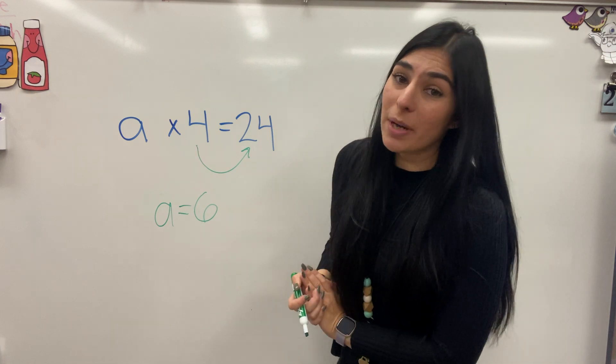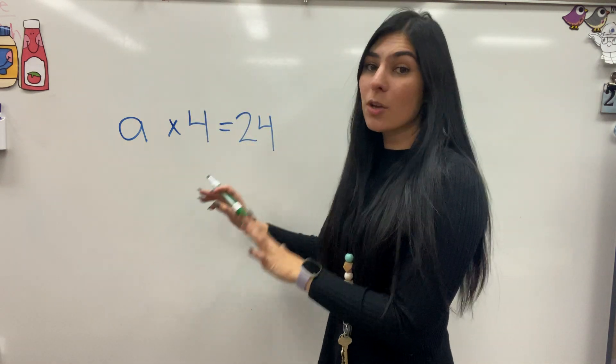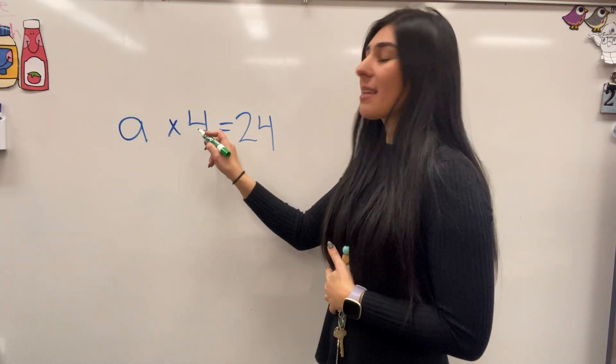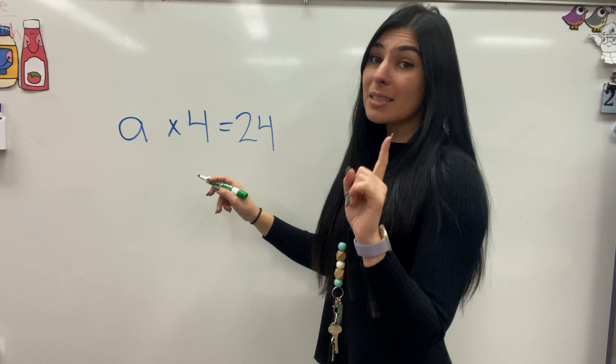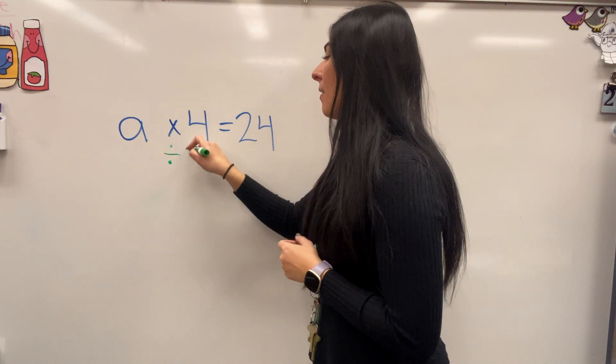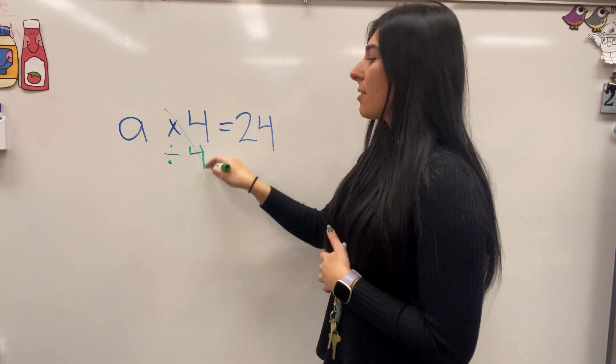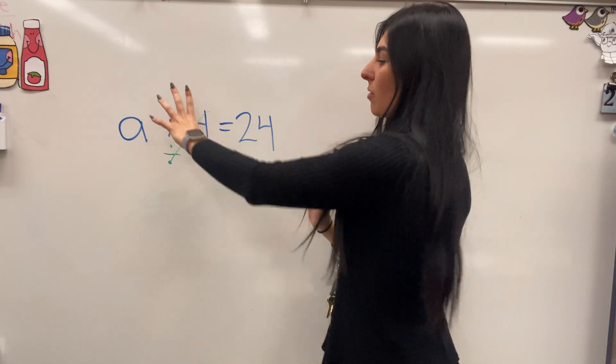Now, there is the other way to solve, which is I want to get this A by itself. So that means I'm going to take this times 4. And what is the opposite of multiplication? Division. So I'm going to instead divide this side by 4, which cancels this out. But whatever I do to this side, I have to do to this side. So that takes it away.